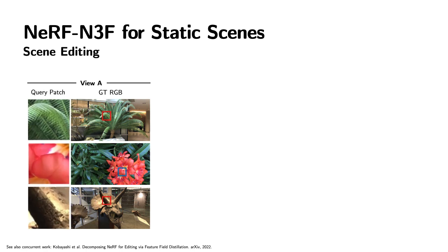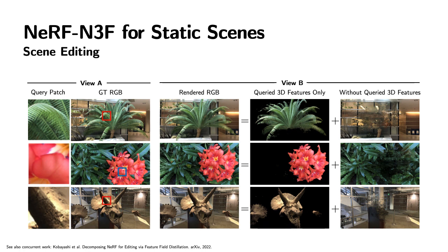We can now leverage these semantic properties of our model and use the learned features for scene editing. Given the features of a query patch for one view, we use volume rendering to project colors and densities into an image only for the part of the scene representation whose features are similar to the query. This results in the segmentation of the object of interest in the same or a different view. We can also render the complement of the selected region, which results in the removal of the object from the scene. Similar results can be found in the concurrent work Decomposing NeRF for Editing via Feature Field Distillation by Kobayashi and colleagues.